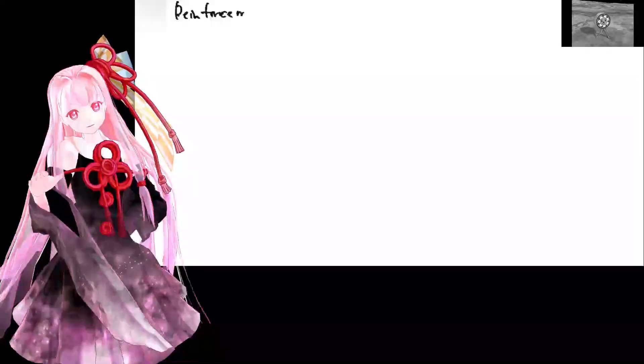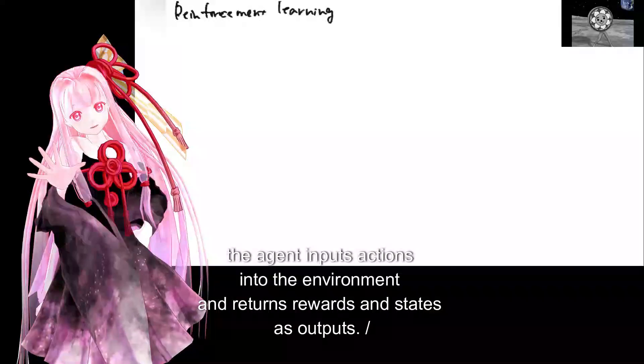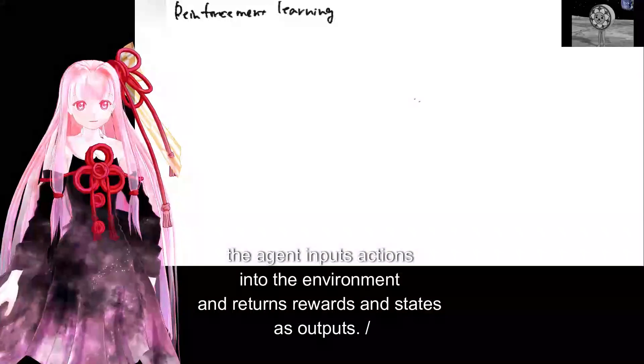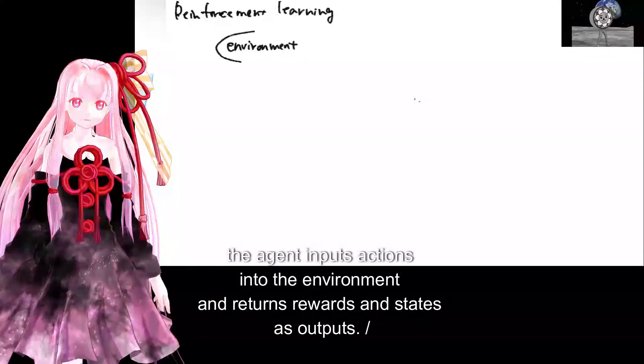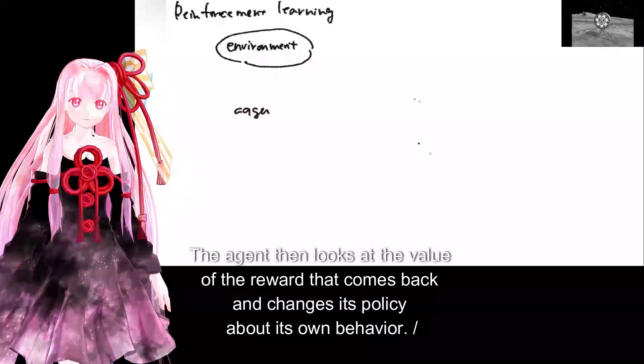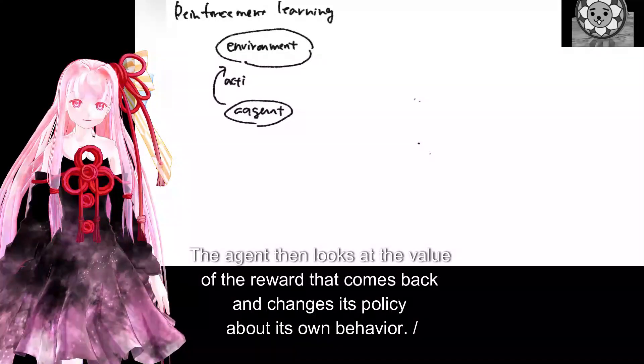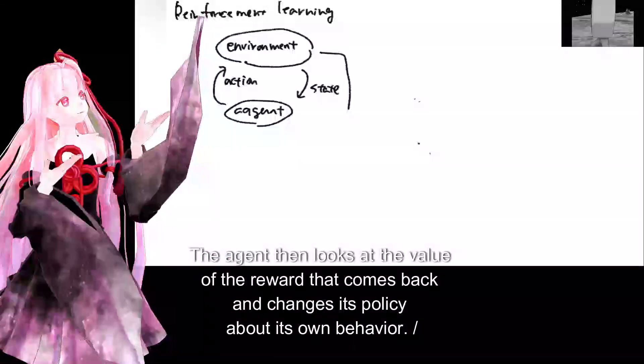In Reinforcement Learning, the agent inputs actions into the environment and returns rewards and states as outputs. The agent then looks at the value of the reward that comes back and changes its policy about its own behavior.